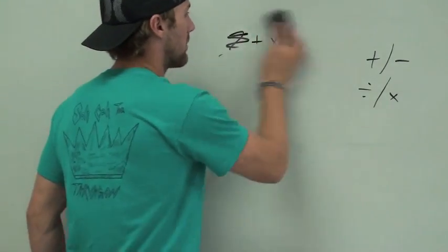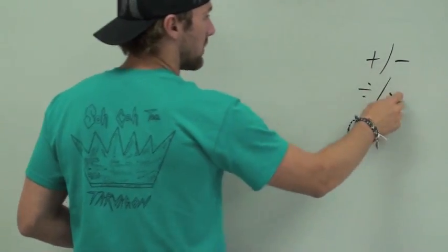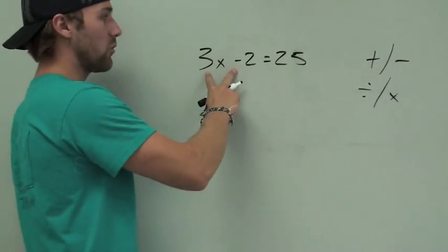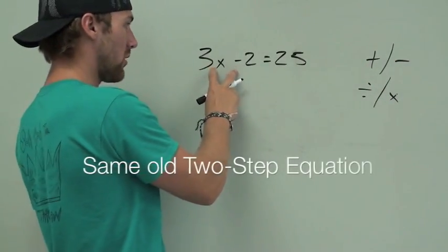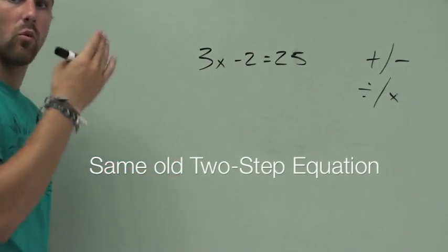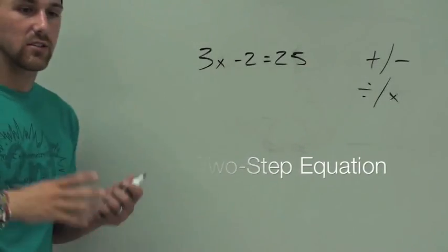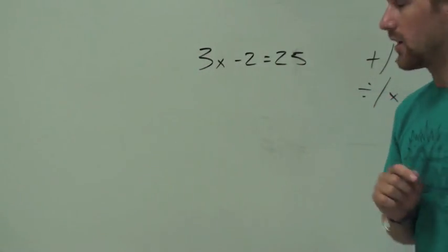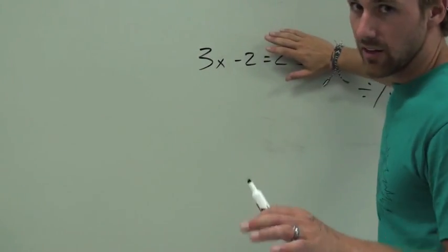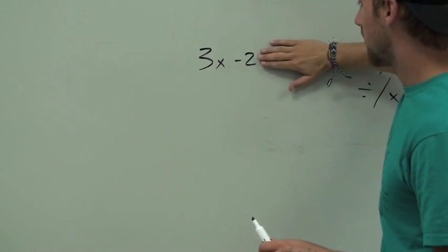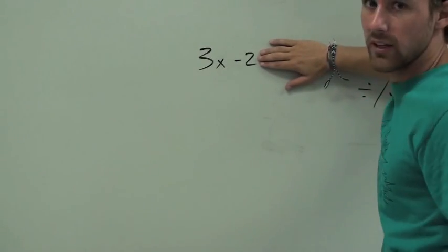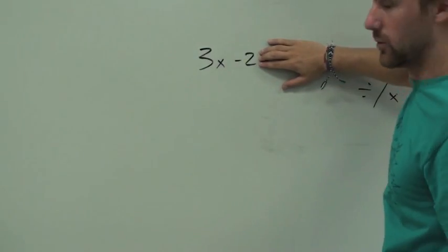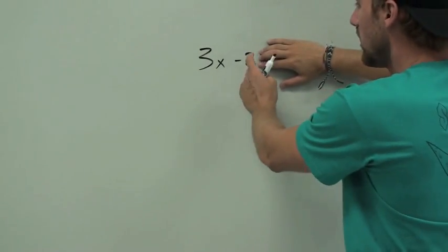Let's do one a little bit more complicated. We're still remembering the opposites. We have more than one thing on the side of the x — we've got more than one number. So we're going to have to get rid of them one at a time. The way I always like to remember: get rid of whatever is farthest away from the x on the same side of the equal sign. Let's cover up this side. What's farthest away from x? Well, obviously that 2 is, because that 3 is pretty much holding hands with it. So if this is farther away, we get rid of it first.